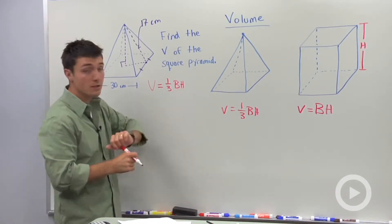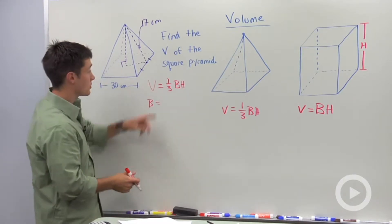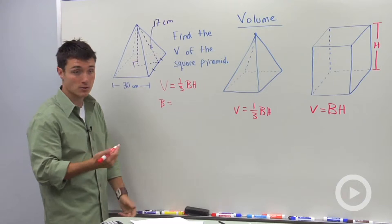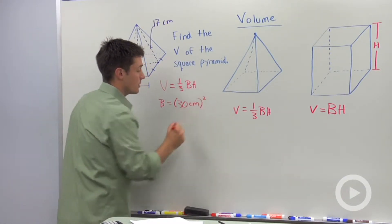So let's go back and say that the volume is equal to one-third base area times height. We need to find base area and we need to find height. The base area is going to be easy to find because we're told that we have a square pyramid, and we're given one side of that square, so our base area is going to be 30 centimeters squared.